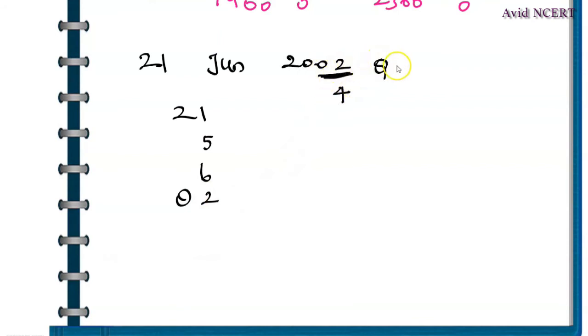Since this is 02, the quotient will be 0, so add 0. Now add all those numbers: 6 plus 2 is 8, 8 plus 0 is 8, 8 plus 5 is 13, plus 21 gives us 34.